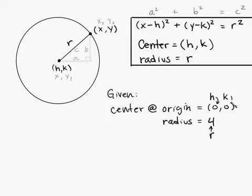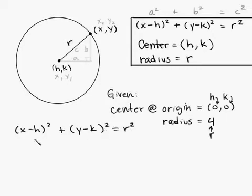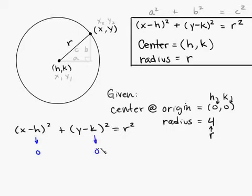They want us to use this center and this radius to construct an equation for a circle. Start by writing the standard form: x minus h, quantity squared, plus y minus k, quantity squared, equals r squared. Then plug in 0 for h, 0 for k, and 4 for r.